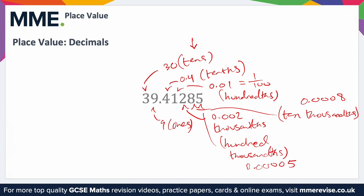You can use the same zero trick for decimals. To find the specific value of the 2, turn everything else to zero: you get 0.00200. Remove the leading zero before the decimal and the trailing zeros after, leaving just 0.002 — which confirms the value we identified for that digit.